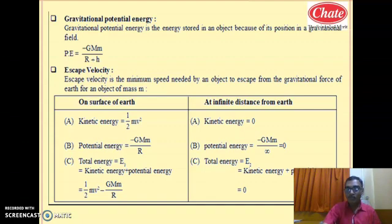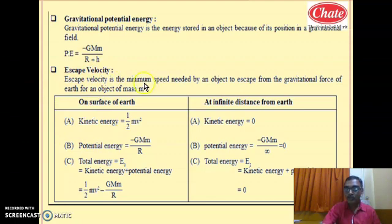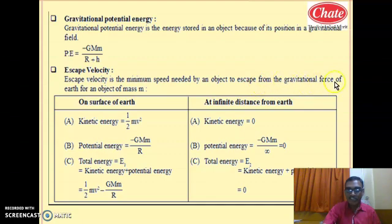For example, to shift a body from Earth to the Moon's gravitational field — like in Chandrayaan — or in Mars missions, we first remove the body from Earth's gravitational field. The velocity required to remove the body from Earth's gravitational field is called escape velocity: the minimum speed needed by an object to escape the gravitational force of the Earth. We will continue the next part in the next session.